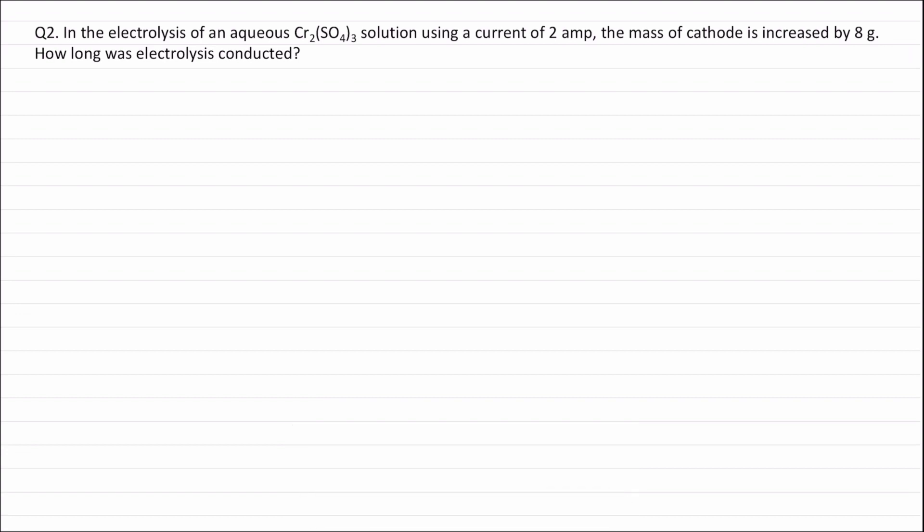Question 2. In the electrolysis of an aqueous chromium sulfate solution using a current of 2 amperes, the mass of cathode is increased by 8 grams. How long was the electrolysis conducted?